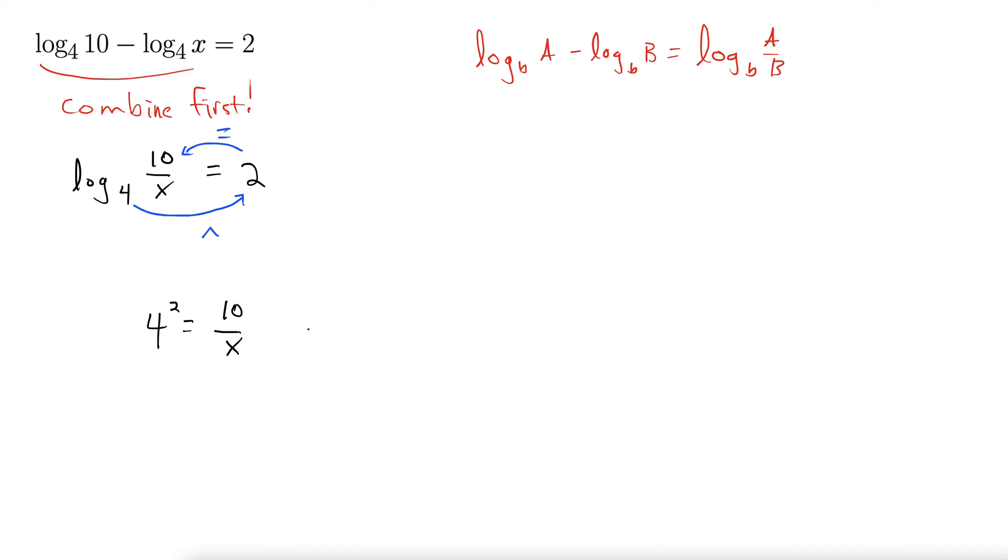Now we just have to solve for x. We're working with 16 equals 10 over x. Multiply by x to get 16x equals 10. Dividing both sides by 16 gives us 10 over 16, which can be simplified. We can factor 2 out of both of those. That's 5 eighths.